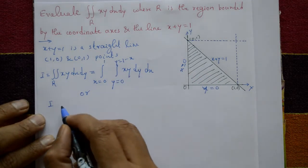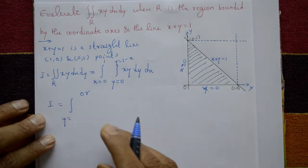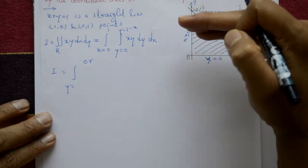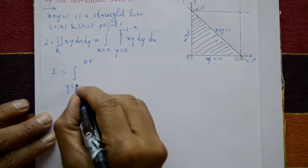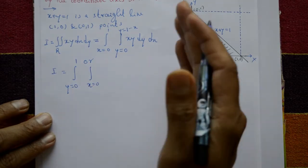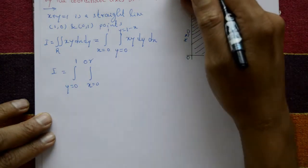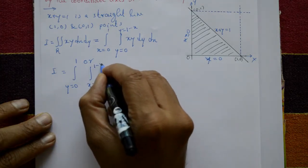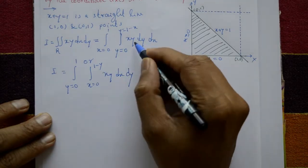Alternatively, we can integrate first with respect to x then y. Set y from 0 to 1 for the outer integral. For x, it goes from the left curve (x = 0) to the right curve (x = 1 minus y). So the integral becomes: integration y from 0 to 1, x from 0 to 1 minus y, of xy dx dy. Both orderings give the same result.